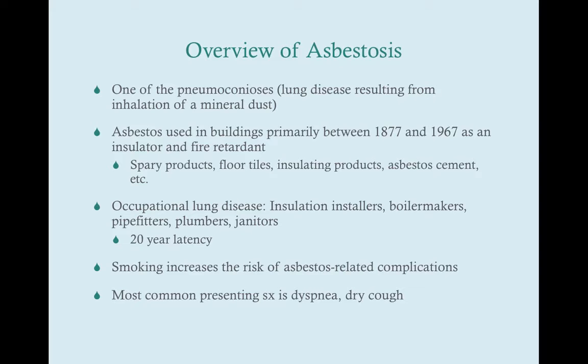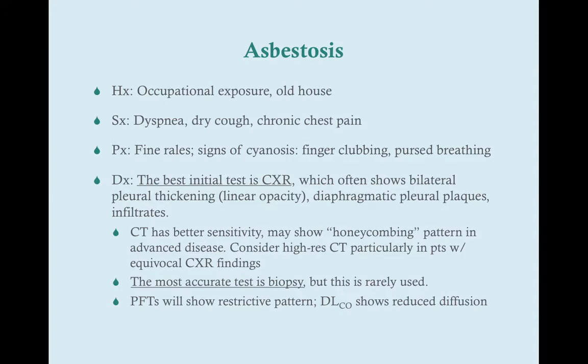The most common presenting symptom is dyspnea and a dry cough, which is relatively nonspecific because that's a common presenting symptom for pretty much all of the restrictive interstitial lung diseases. The most important thing you're going to have in asbestosis is a history of occupational exposure — a patient who has been advised they may have been exposed to asbestos, or one that fits occupations such as insulation worker or boilermaker.